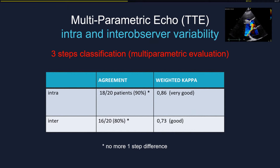With qualitative assessment using TTE's multi-parametric approach, the intra-observer variability was very good and the inter-observer variability was good — meaning that even between two very experienced observers, there is still some level of variability with TTE.